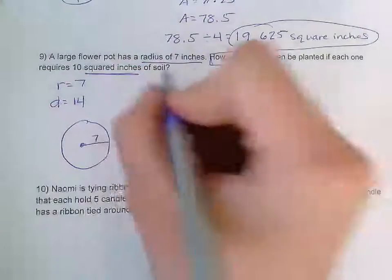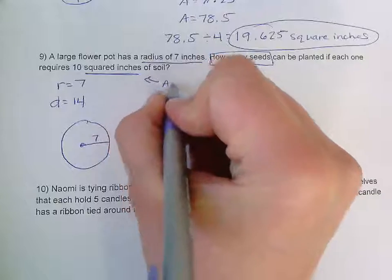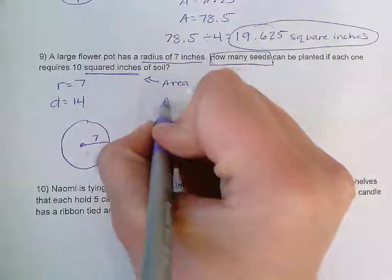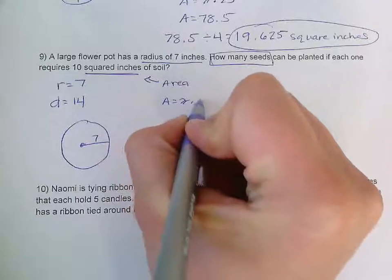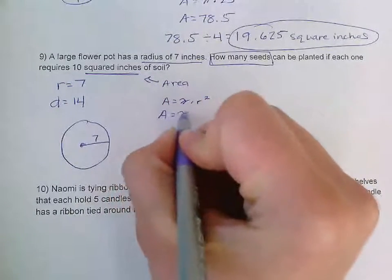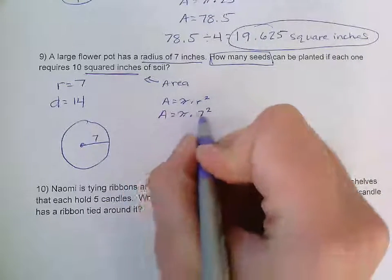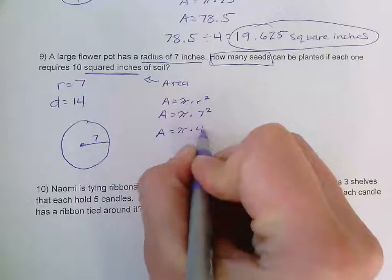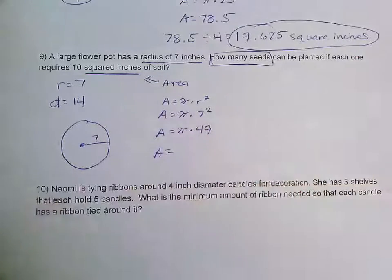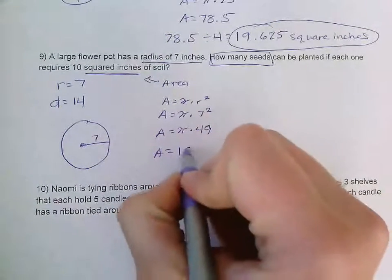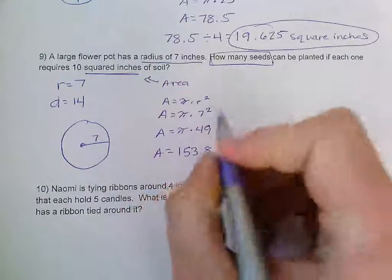Again, squared inches tells me that I need to find the area. So first thing I'm going to do is find the area. If area equals pi times r squared, and I know that r is seven, that means area is equal to pi times seven squared. Seven squared is 49. And I'll plug that in my calculator. We've got pi times 49 is equal to 153.86.